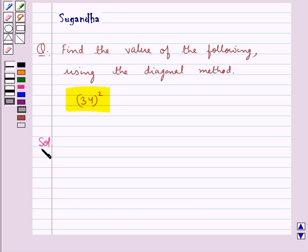Let's move on to the solution. We need to find 34 square. Now the given number, that is 34, contains 2 digits. So we will draw a square and we will divide it into 4 sub squares.